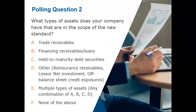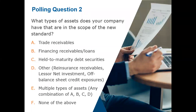Our second polling question: what type of assets does your company have that are in scope under the new standards? I assume most everyone on this call has trade receivables, and I also expect there are a lot of companies with multiple types of assets. We have a pretty good cross-industry representation today, so it'll be interesting to see the results. Just about everyone will be impacted in some way, shape, or form, and hopefully people have done some sort of scoping to see what assets are coming in.